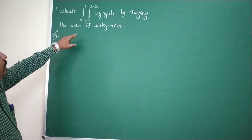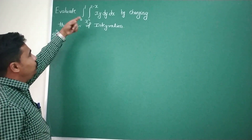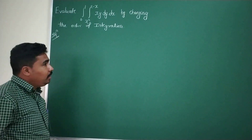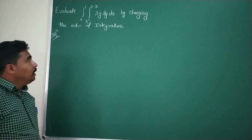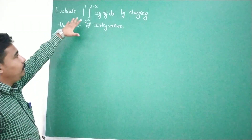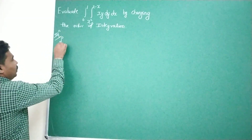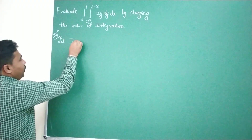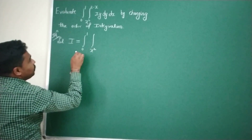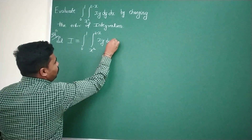Evaluate the double integral of xy dy dx over the intervals 0 to 1 for x, and x squared to 2 minus x for y, by changing the order of integration. So the given integral is I equal to integral 0 to 1, integral x squared to 2 minus x, of xy dy dx.